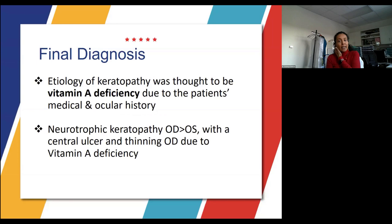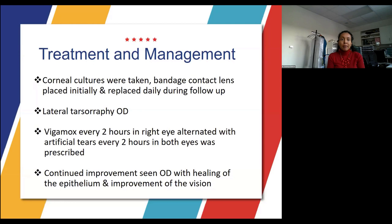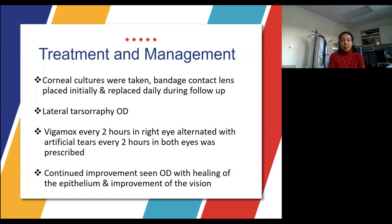Based on our differentials and the vitamin A level, the keratopathy was thought to be due to vitamin A deficiency given his medical and ocular history. Since he had no sensation in the right cornea, we diagnosed this as neurotrophic keratopathy. The next steps were corneal cultures, a bandage contact lens replaced daily, and a lateral tarsorrhaphy in the right eye. Vigamox was prescribed every two hours in the right eye alternated with artificial tears every two hours in both eyes. He showed continued improvement with healing of the epithelium.